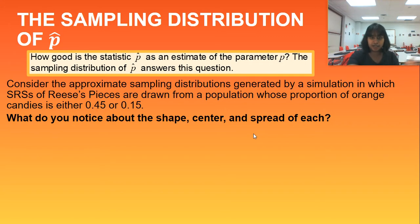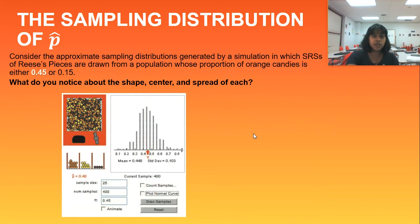But I went ahead and pulled these images for us. So if I'm looking at a sample size of 25, I drew 25 Reese's Pieces from this candy machine, and I'm looking at a p-value of 0.45. They represent it as pi on the applet, but we know that this is p. Then what do you notice about it? Well, my mean is 0.448. Hey, that's pretty close. And my standard deviation is 0.103.